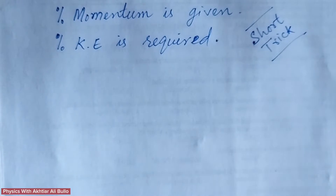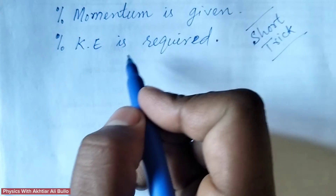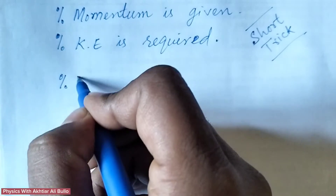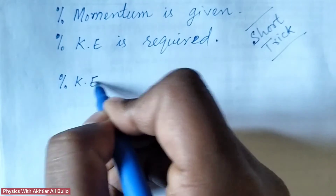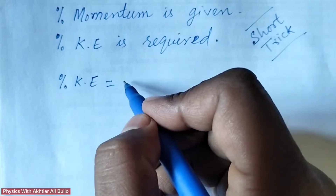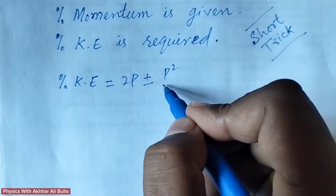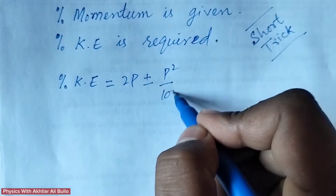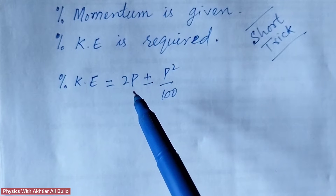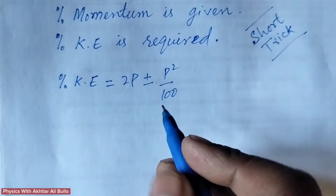So, let's start. When percentage in momentum is given, then we will calculate percentage in kinetic energy by using this formula: percentage in kinetic energy is equal to 2p ± p² upon 100. This is the formula which is used to calculate percentage increase or decrease in kinetic energy. For example,